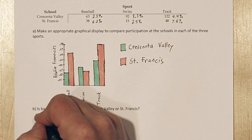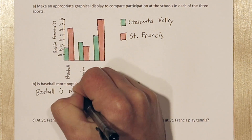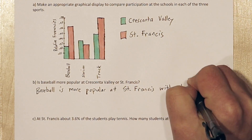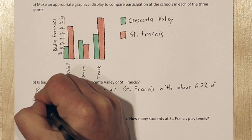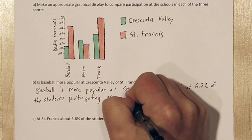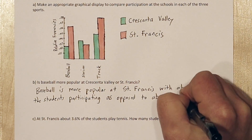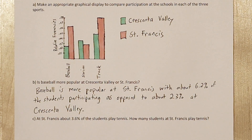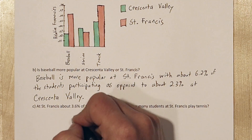We can see that baseball is more popular at St. Francis, with about 6.2% of the students participating as opposed to about 2.3% at Kersenna Valley.